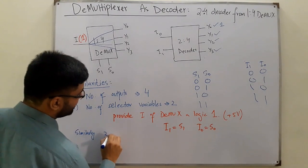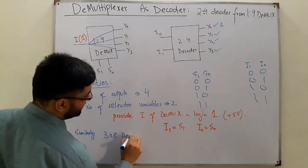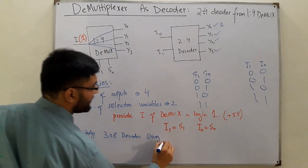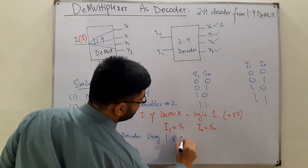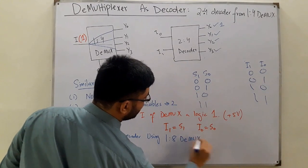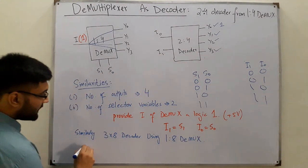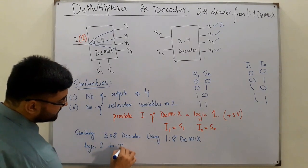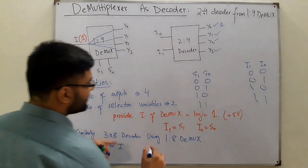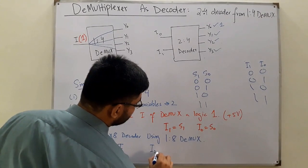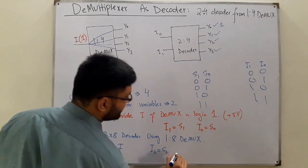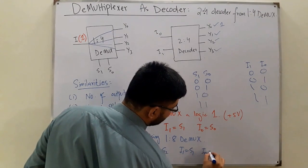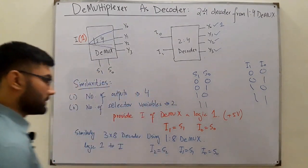Using a 1x8 demux, how is that? Again, you provide a logic one to your input of the demultiplexer and replace the selector variables: I2 equals S2, I1 equals S1, and I0 equals S0.